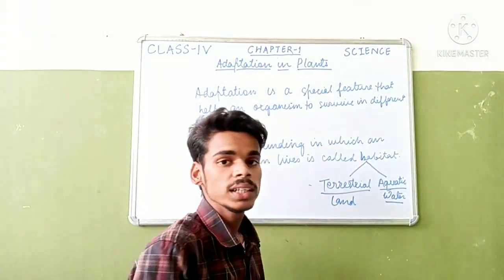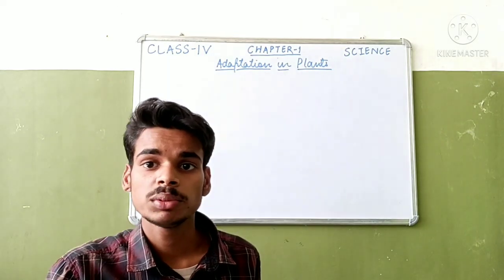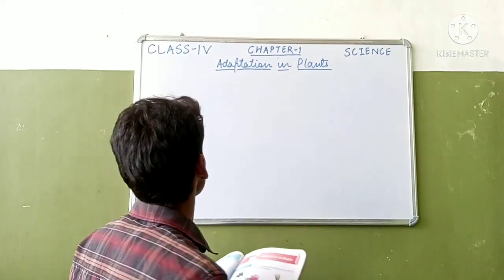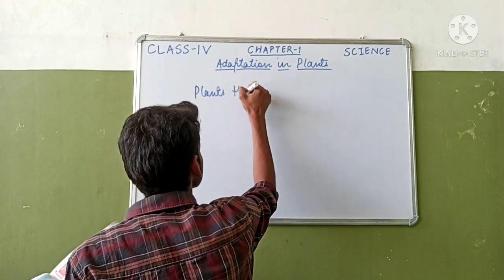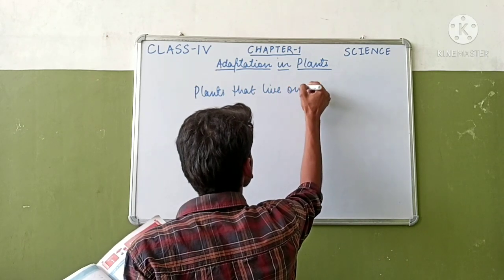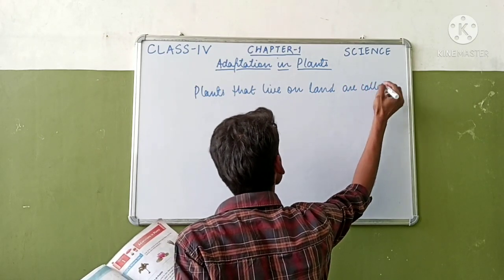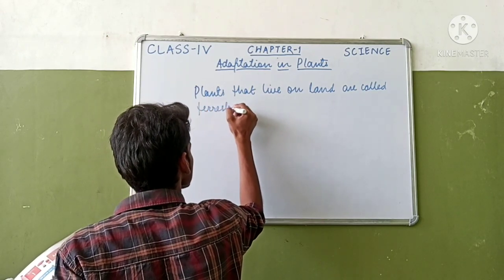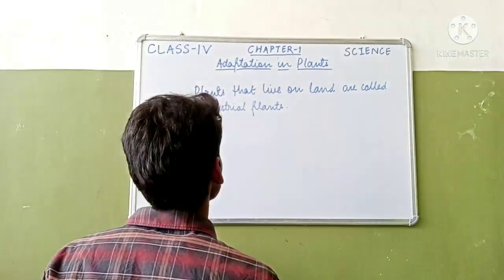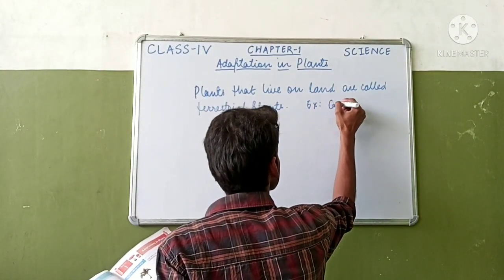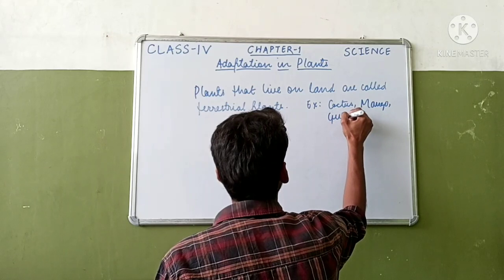Now we will discuss both these types one by one. Different types of terrestrial plants live in different habitats — some live in deserts, some live in marshy areas, some live on hills and mountains. Plants that live on land are called terrestrial plants. Examples are cactus, mango, guava, etc.